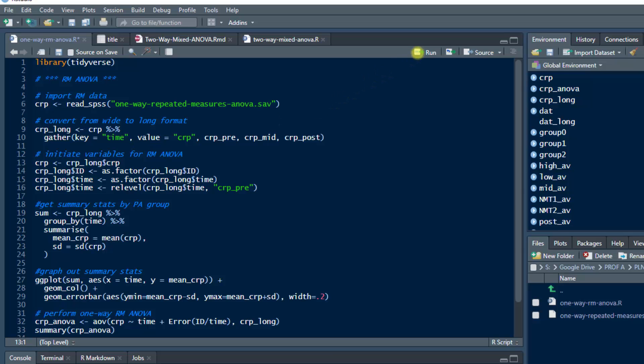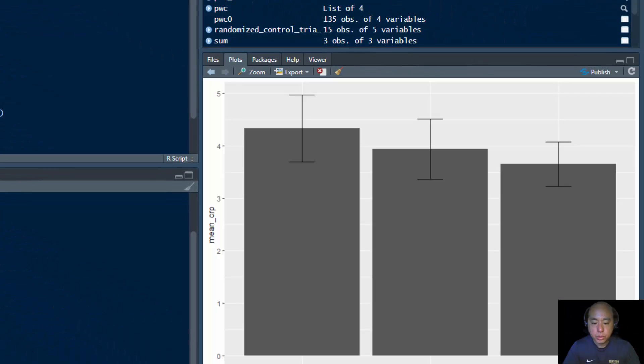Let me show you how this looks in CRP long. Basically what it does is it has CRP as a dependent variable, and then time, which is pre, mid, and post, is its own factor. It has its own column. So it's the same dataset just converted into long.